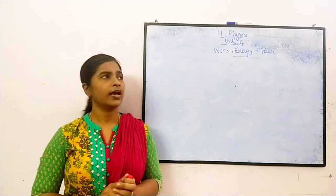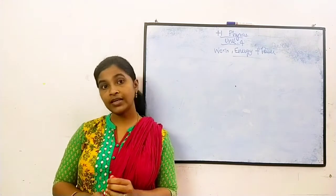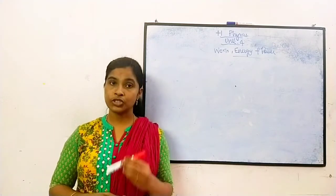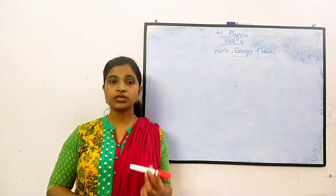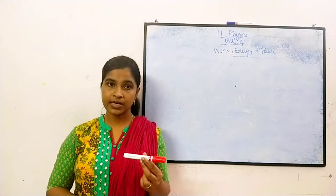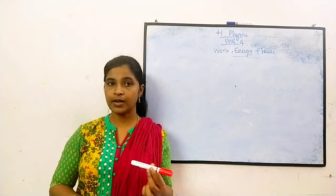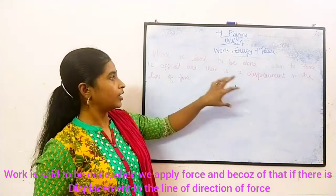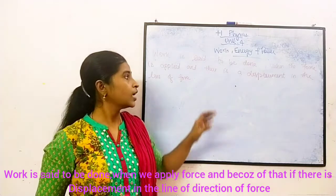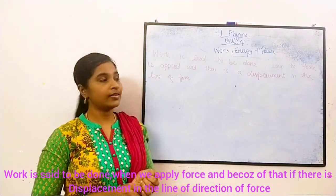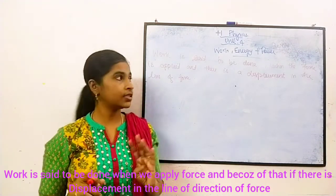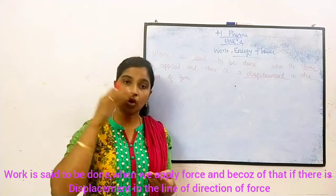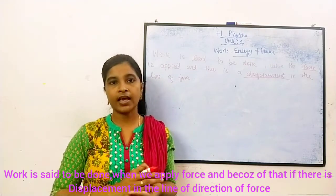Now, physically — in relation to physics — how will we define work, energy and power? A work is said to be done when we apply a force and because of that force, there is a displacement in the direction of the line of force. So work is said to be done when force is applied and because of that force there is a displacement in the body in the line of force. Two things are very important: force and displacement. Only then we can say yes, a work is done.